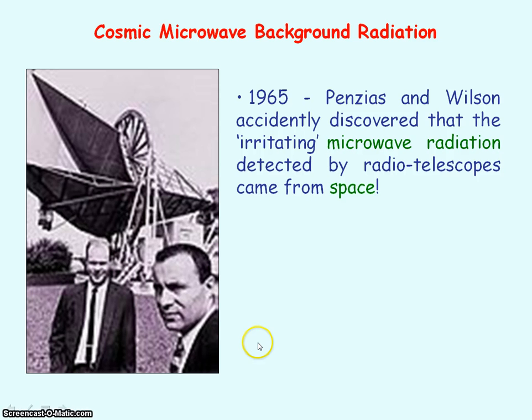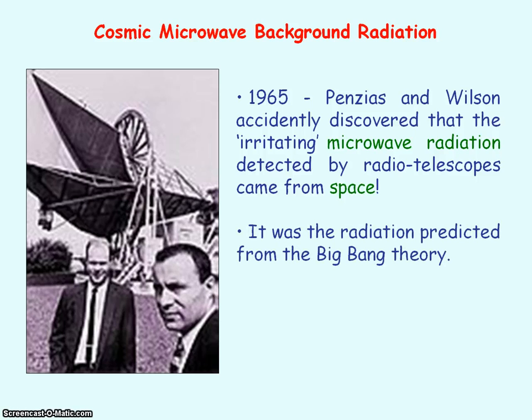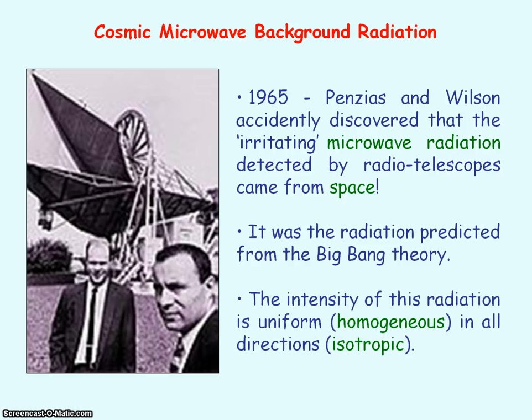And Penzias and Wilson accidentally discovered that the irritating microwave radiation that was detected by the radio telescopes that they were using actually came from space. And it was the radiation that was predicted from the big bang theory. And this radiation was uniform in all directions. They were awarded the Nobel prize in physics for their accidental discovery because it provided strong evidence for the big bang theory.